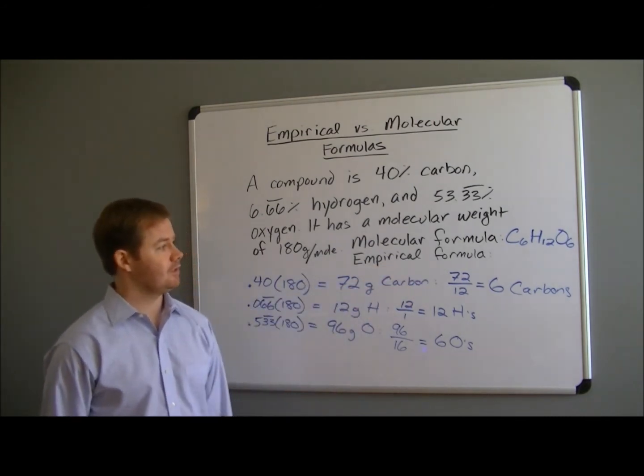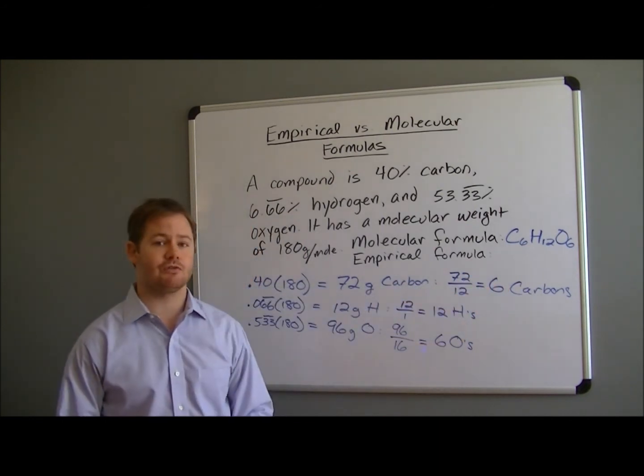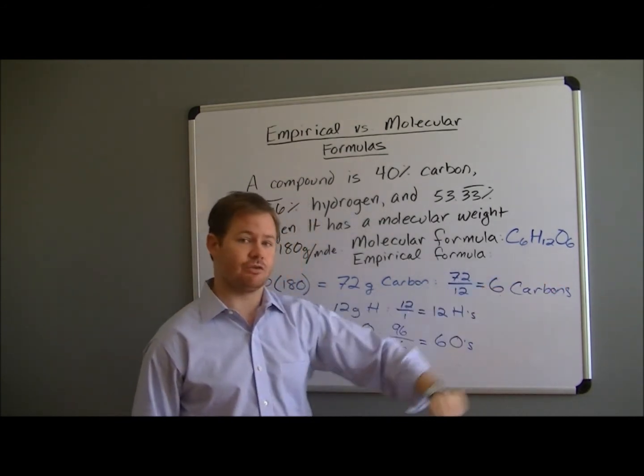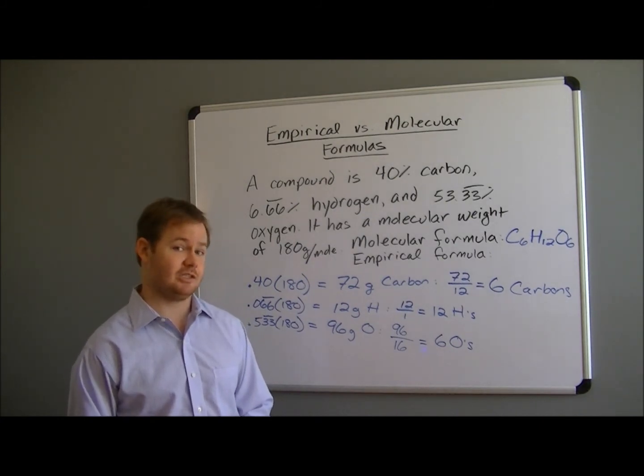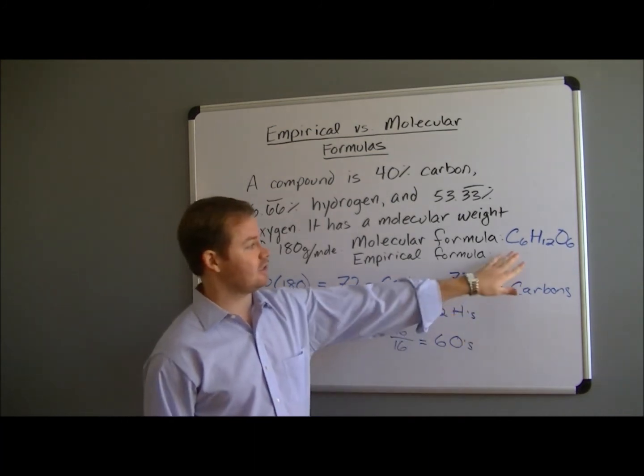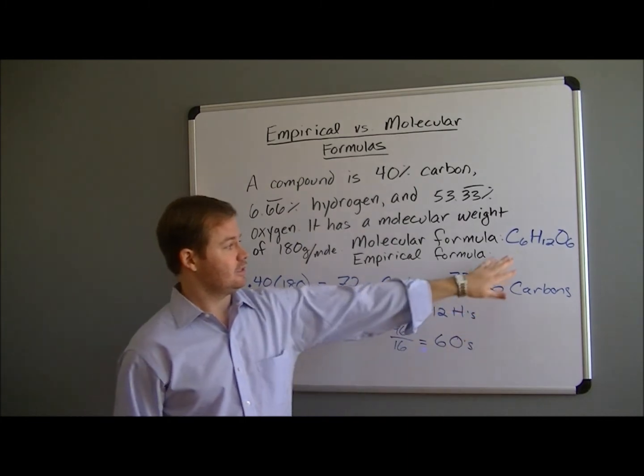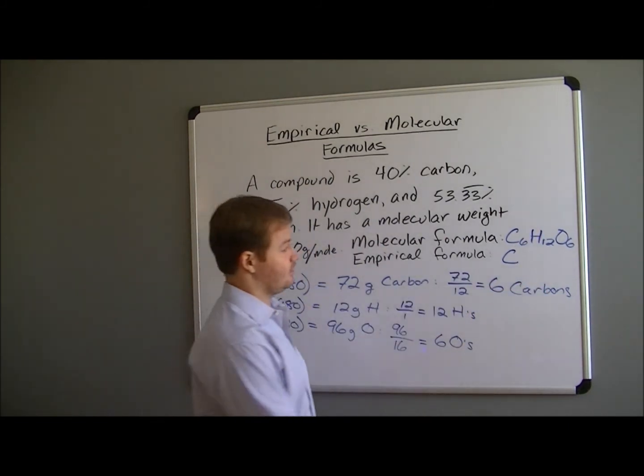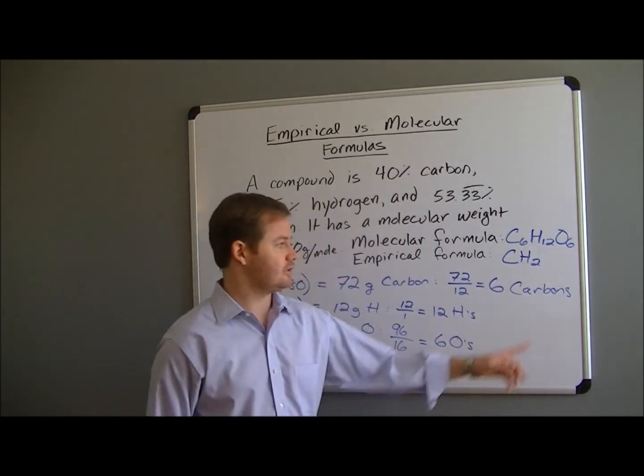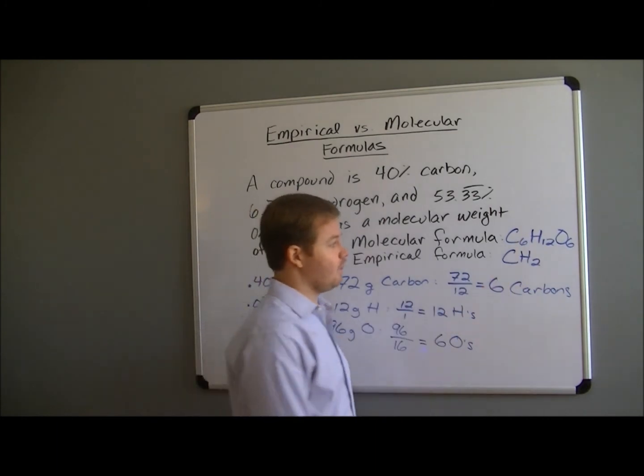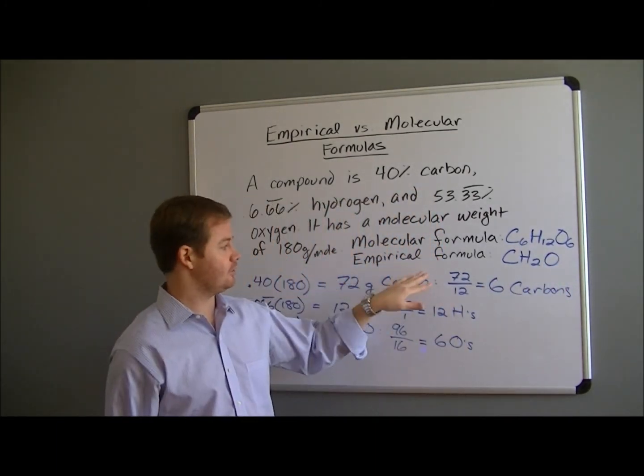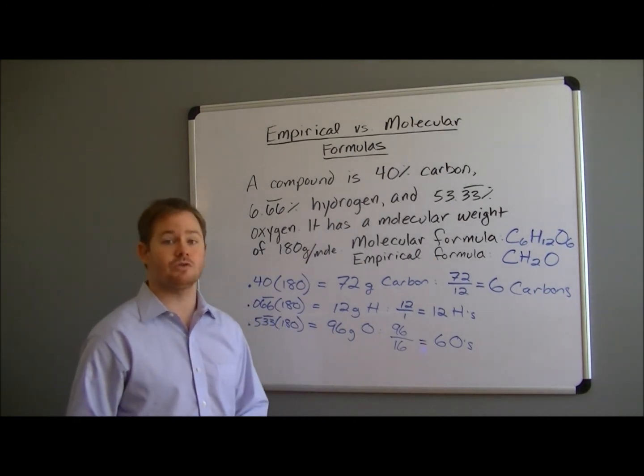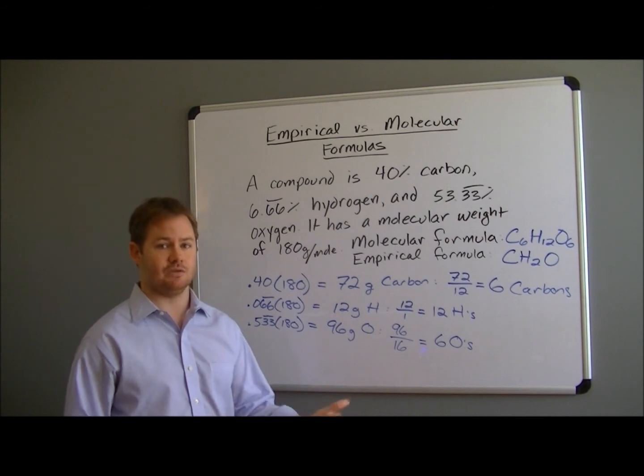And then for the empirical formula, we're going to take these subscripts and we're going to look for the greatest common factor and divide by that number in order to reduce the numbers that we have. So we have 6, 12, and 6. The greatest common factor for all three of those numbers is 6. 6 goes into 6 one time, so that means when we reduce, we'll have one carbon. 6 goes into 12 twice, so when we reduce that, we'll have two hydrogens. And 6 goes into 6 oxygens one time, so we'll have one oxygen for our empirical formula. So your empirical formula is going to be your molecular formula once it's been fully reduced, and you're going to reduce that in a similar way to the way that you would reduce any fraction where you try to find the greatest common factor that you can divide into both terms.